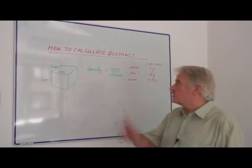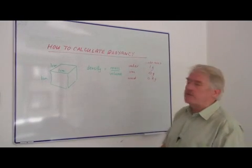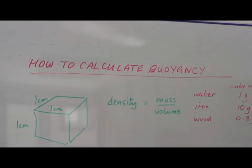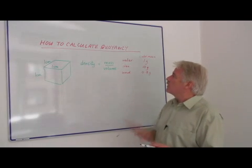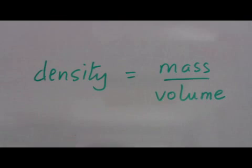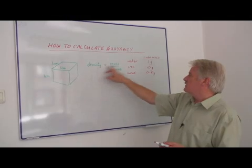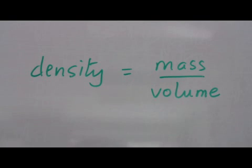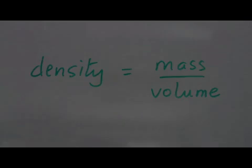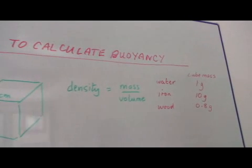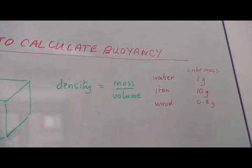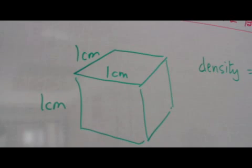Hi, I'm Steve Jones and I'm going to tell you how to calculate buoyancy. First of all we have to look at a quantity we call density. Density is mass measured in grams or kilograms divided by volume measured in centimeters cubed or possibly in cubic meters. For the moment we're going to use centimeters and grams.